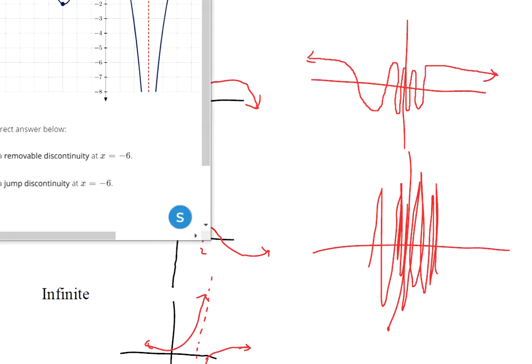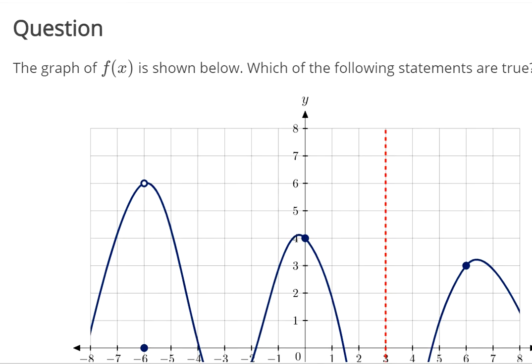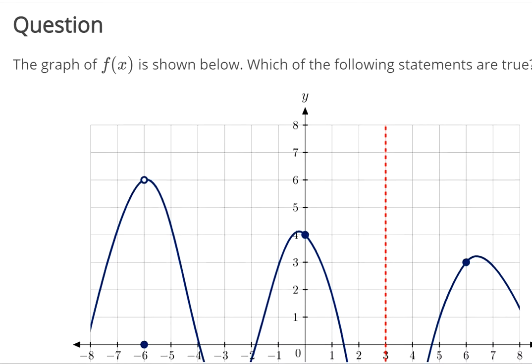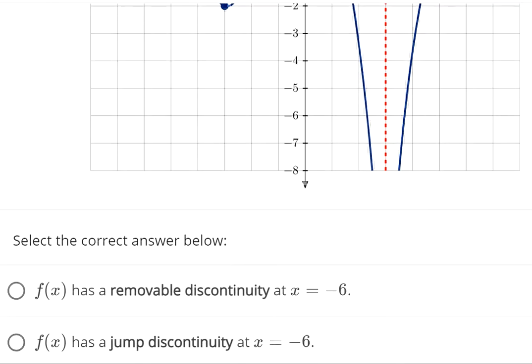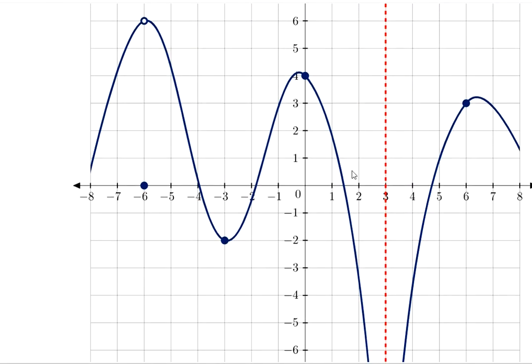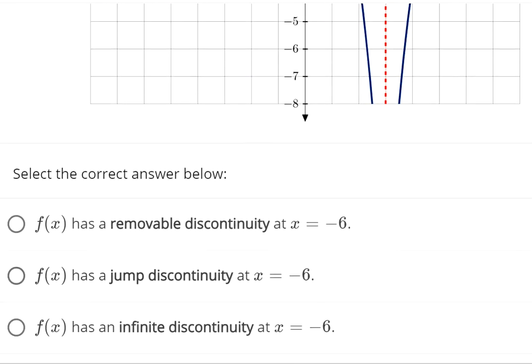I'll try to do a couple Newton problems here. We have a graph of f of x. We're supposed to label the types of discontinuities. I see a removable discontinuity at x equals negative six. So that's true. Is it multiple select? No.